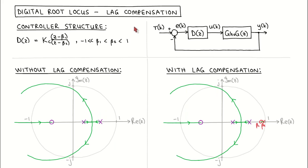With lag compensation we add a pole and a zero to the controller, with the pole to the right of the zero and both relatively close to z equal to one. The purpose of lag compensation is to improve the steady state error of the closed loop system.